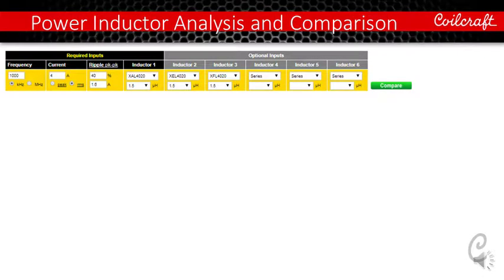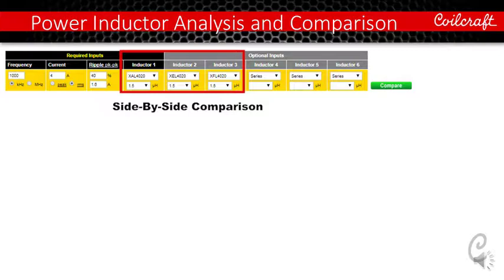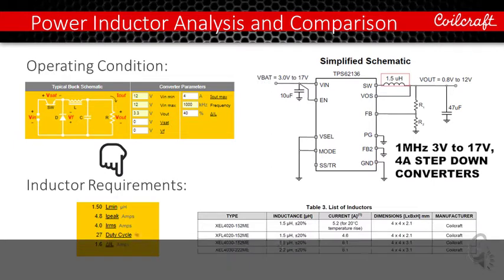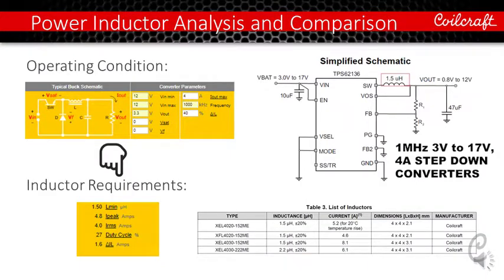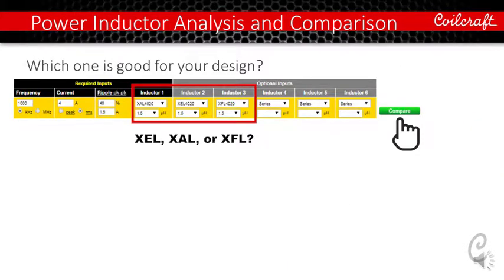Now let's take a look at an example of side-by-side comparison for a few different inductors you are interested in. Take a TI step-down converter design as an example. So the TPS62136 is designed for a nominal 1.5 microhenry inductor. As you can see, Coilcraft XEL and XFL were recommended for use with this converter. We also have a XAL4020-152 with the same package size. So one question comes up, which one you should pick for this particular operating condition. As we mentioned earlier, you can enter the operating conditions for frequency, peak current or average current and the ripple current going through the inductor. Here we pick XAL4020, XEL4020 and XFL4020 at 1.5 microhenry. We'll let the tool tell us which one to pick.